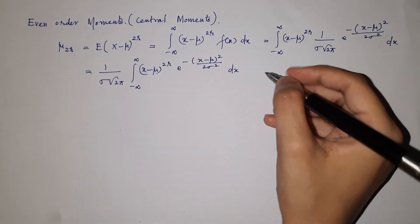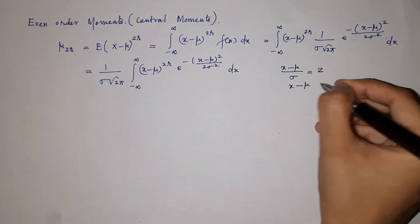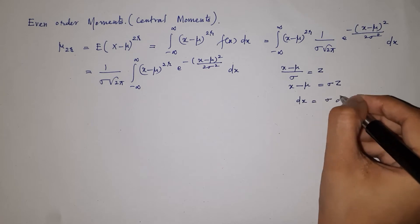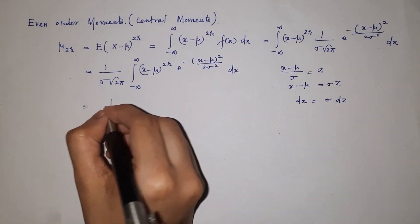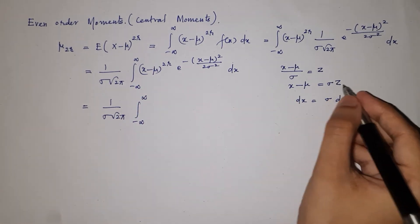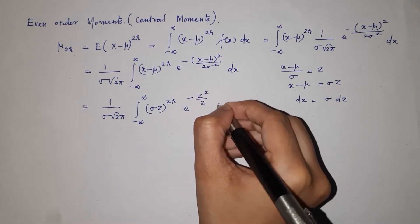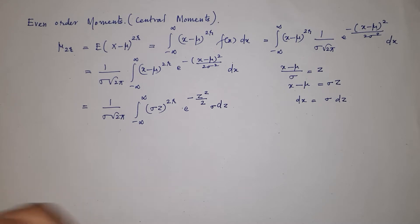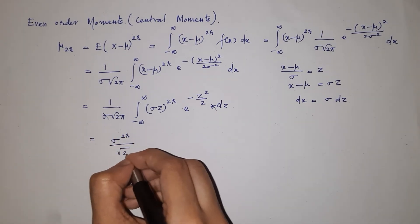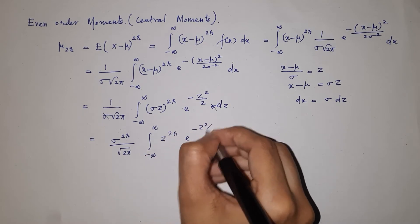Now we substitute z equals (x minus mu) over sigma, so x minus mu equals sigma z, and taking the derivative on both sides gives dx equals sigma dz. Substituting, (x minus mu) raised to 2r becomes (sigma z) raised to 2r, and the exponent becomes e raised to minus z squared over 2. The sigma from dx and the sigma in the denominator cancel, leaving sigma raised to 2r divided by root 2 pi, times the integral from minus infinity to infinity of z raised to 2r into e raised to minus z squared over 2, dz.